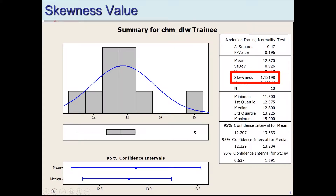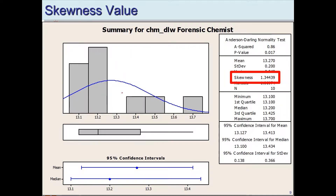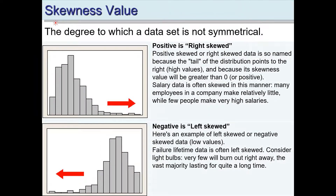Now the skewness value — the trainee is skewed at 1.13, not very much. The data is pretty symmetric, with one outlier at 15 that tails slightly to the right, but overall fairly symmetric around the tall middle peak. The forensic chemist, however, is definitely skewed to the right — strong on one side and tapering off. That's an example of a skewed distribution. Positive skewness means skewed to the right; negative means skewed to the left.